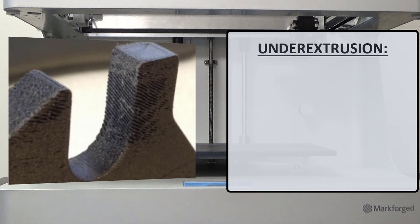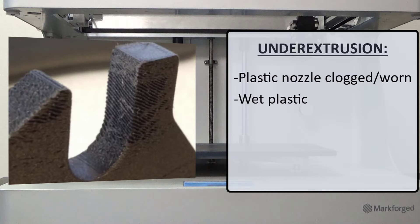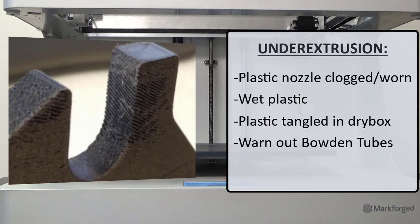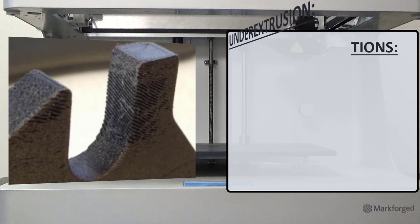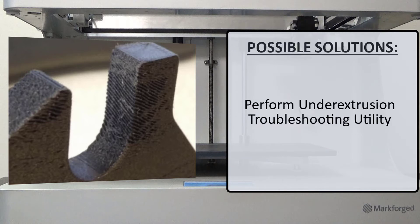Some common causes of this issue could be a plastic nozzle that is clogged or worn out, wet plastic, plastic that is tangled in the dry box, a worn out Bowden tube, or in some extreme cases, extruder failure. We would perform the underextrusion troubleshooting utility in order to further diagnose and correct any of these issues.